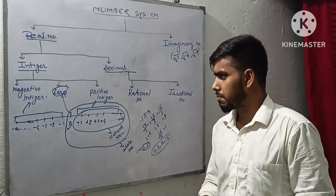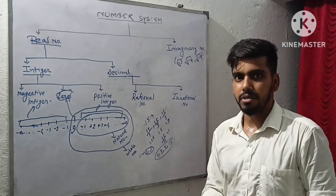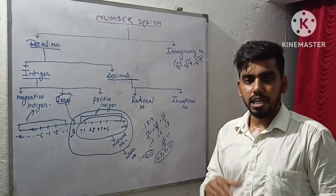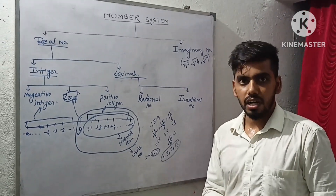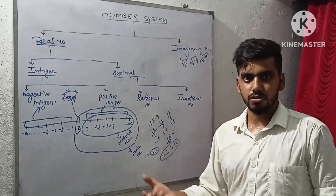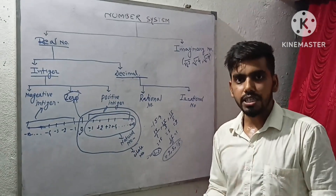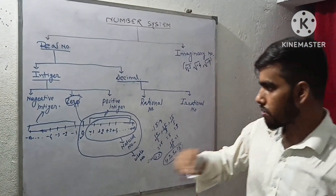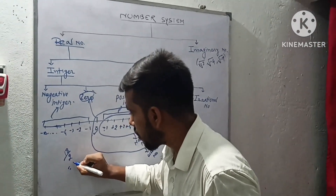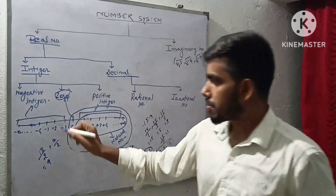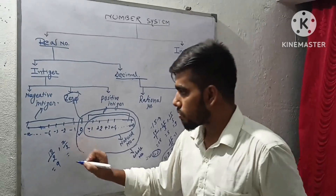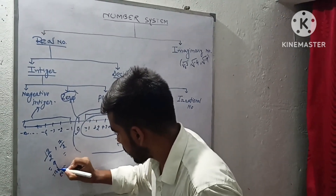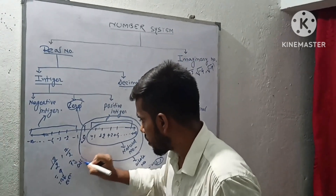We also know about even and odd numbers. Even numbers are all the multiples of 2 — from the table of 2: 2, 4, 6, and so on. Numbers that are not multiples of 2 are odd numbers. Alternatively, a number completely divisible by 2 is an even number, and a number not completely divisible by 2 is an odd number. So 18 is even and 7 is odd.